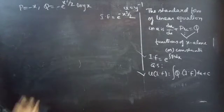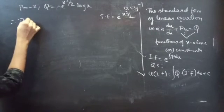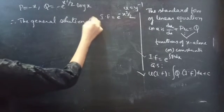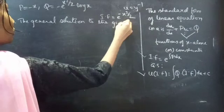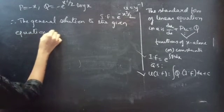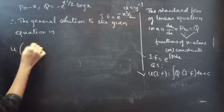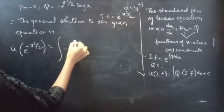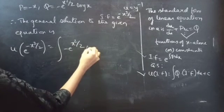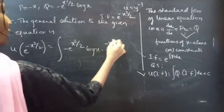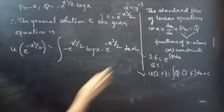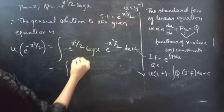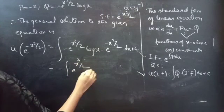Now we will find the general solution to the given equation. Using the formula, u times e^(−x²/2) equals ∫(−e^(x²/2) times log x) times e^(−x²/2) dx plus c. Taking the minus outside: −∫e^(x²/2) times e^(−x²/2) times log x dx plus c.